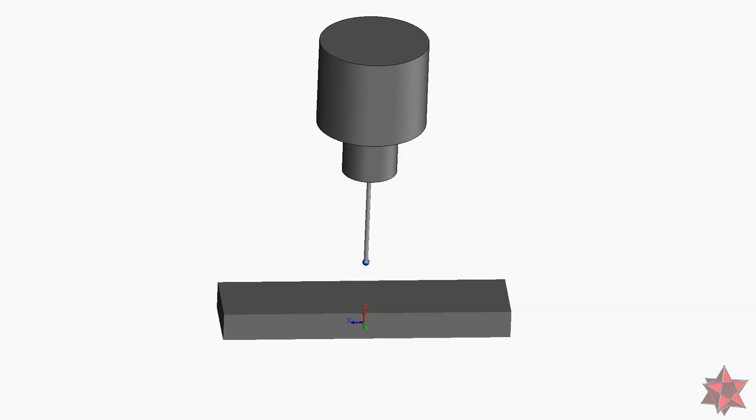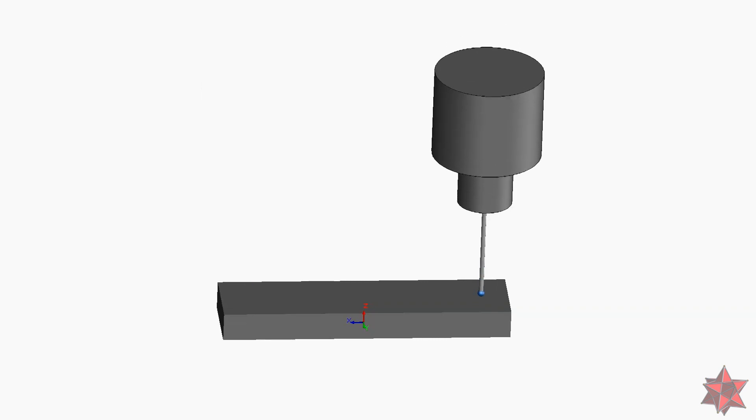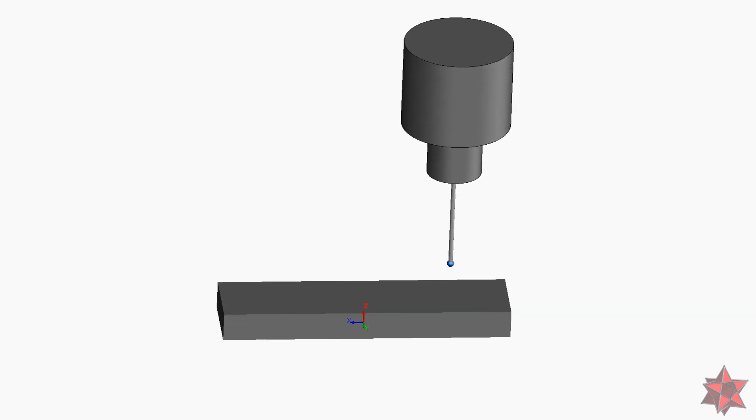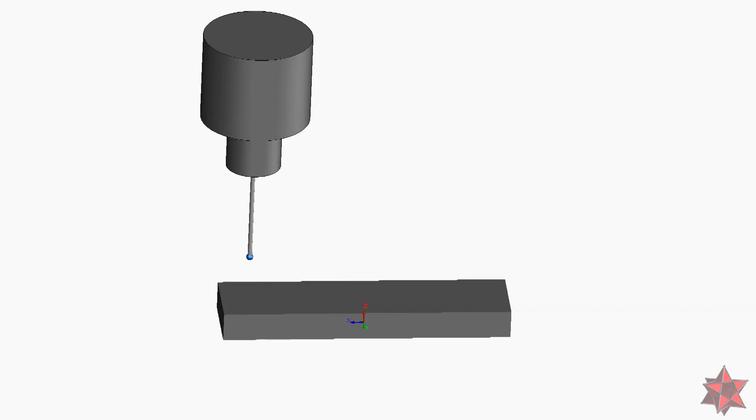Tolerance zone for the flatness is situated between a parallel plane with the adjacent plane and the adjacent plane. Distance between them is equal to tolerance of flatness requirement.